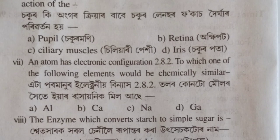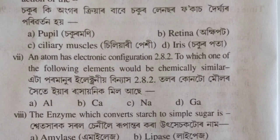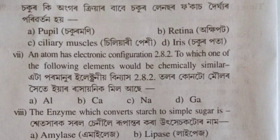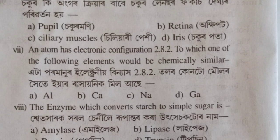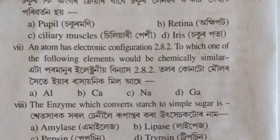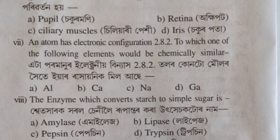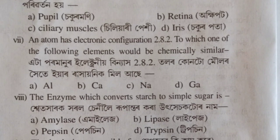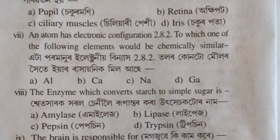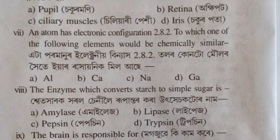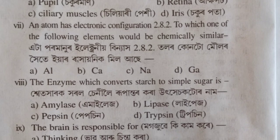Question number 7: an atom has the electronic configuration 2.8.2. To which one of the following elements would it be chemically similar? An atom with electronic configuration 2.8.2 — the element with a similar configuration would have the same number of valence electrons.